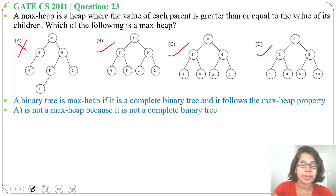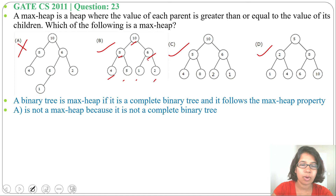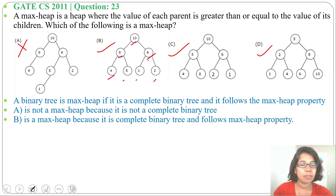Option B is a complete binary tree. Checking parental dominance: 10 is greater than 8 and 6; 8 is greater than 4 and 5; 6 is greater than 1 and 2. It satisfies both properties, so option B is a max-heap.